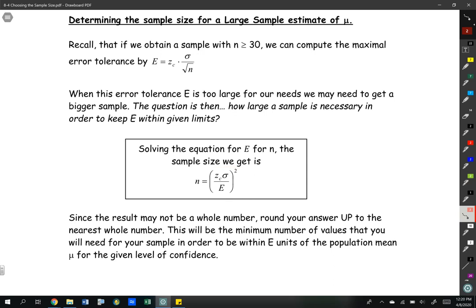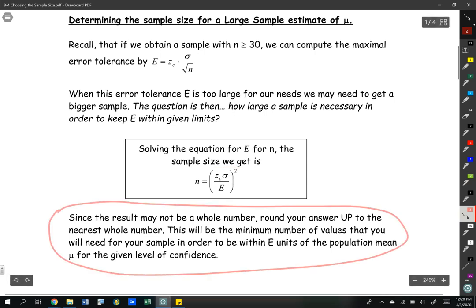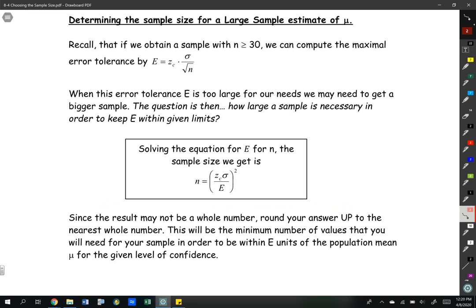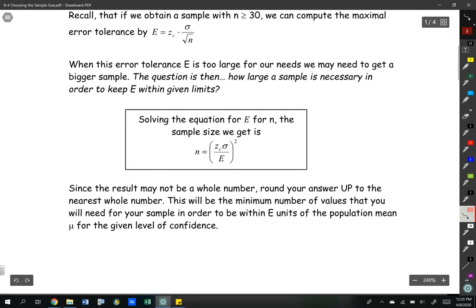I just want to make an important note here. Since the result may not be a whole number, we're always going to round up to the nearest whole number. This will be the minimum number of values that you would need for your sample in order to be within E units of a population mean for the given level of confidence.